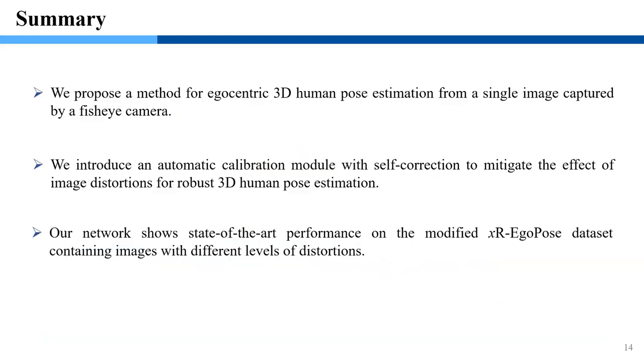We give a summary of the paper. We propose a method for egocentric 3D human pose estimation from a single image captured by a fisheye camera. We introduce an automatic calibration module with self-correction to mitigate the effect of image distortions for robust 3D human pose estimation. Finally, our network shows state-of-the-art performance on the modified xR-EgoPose dataset containing images with different levels of image distortions.